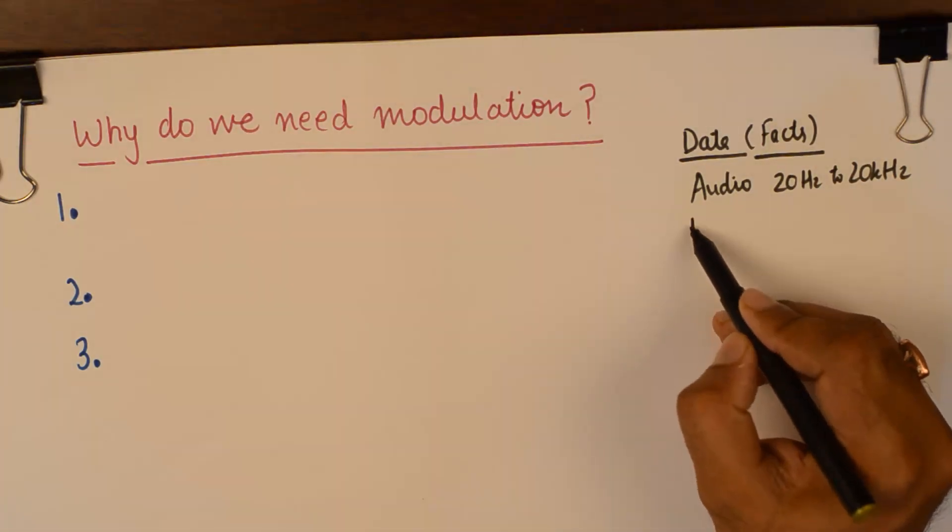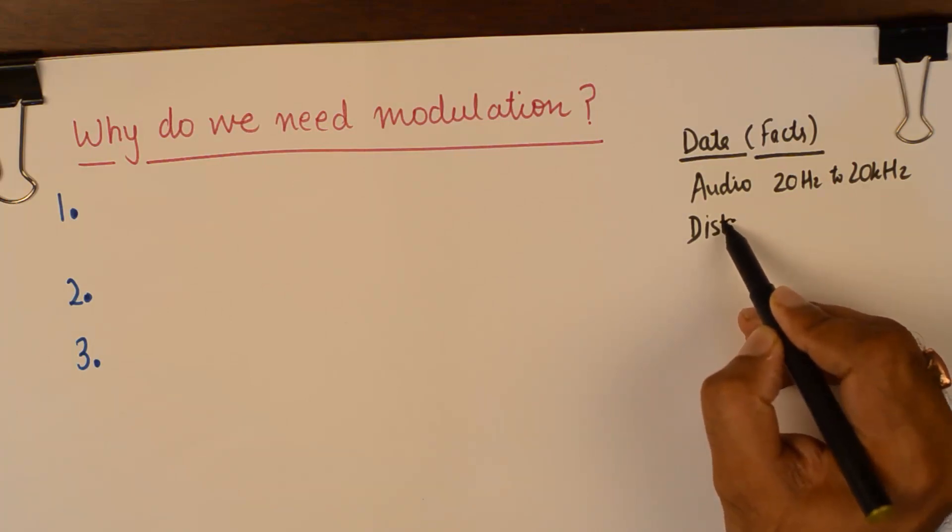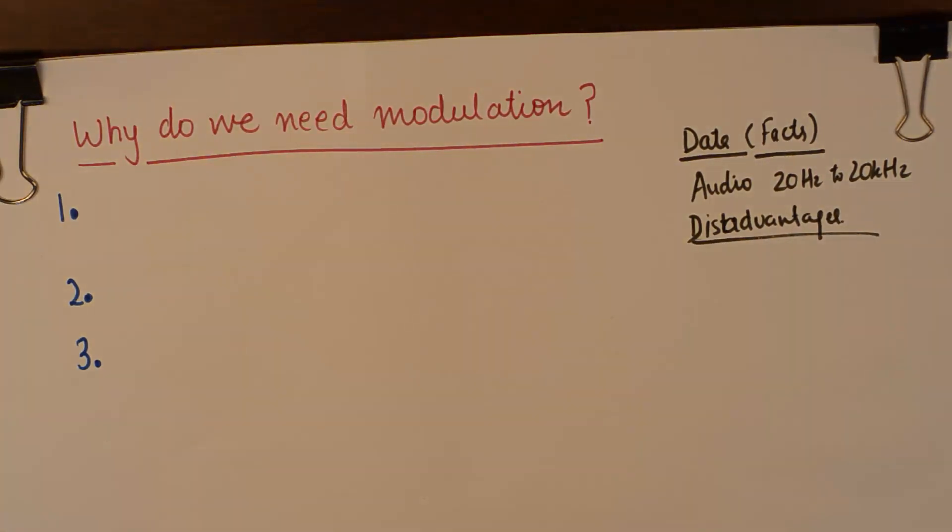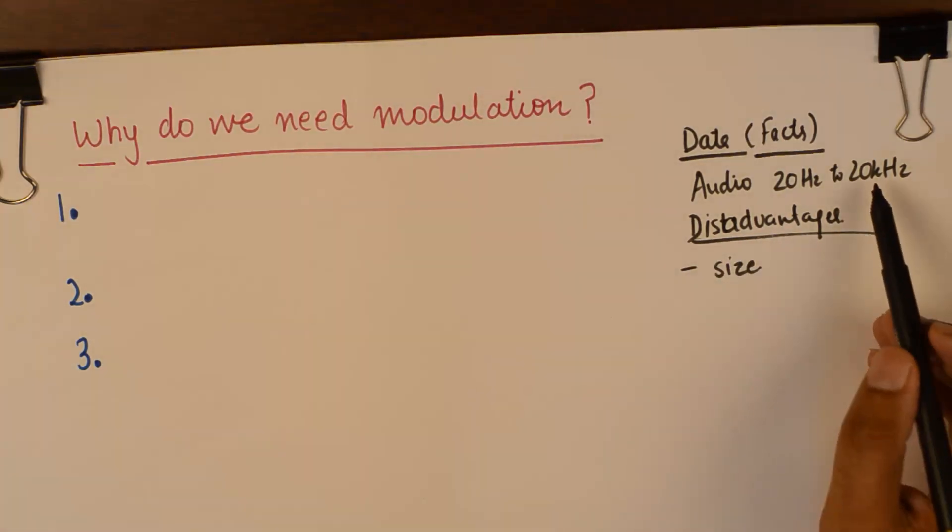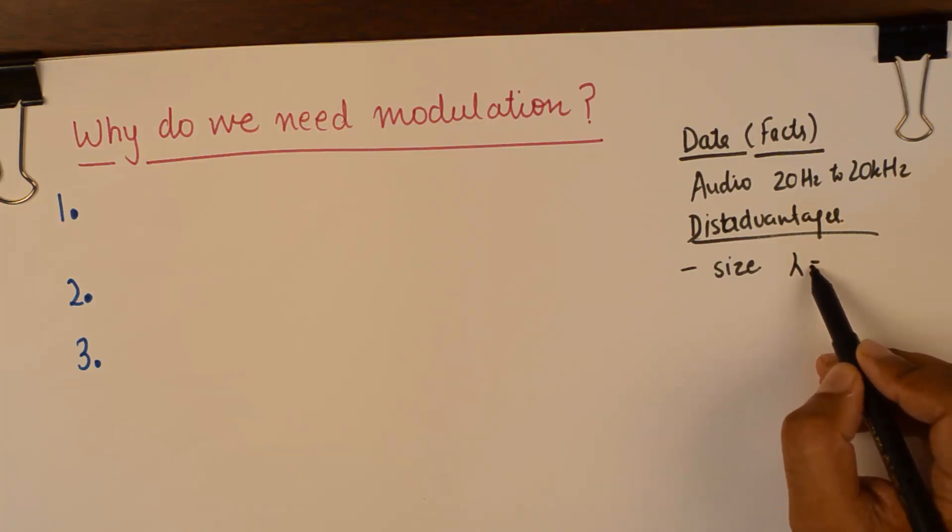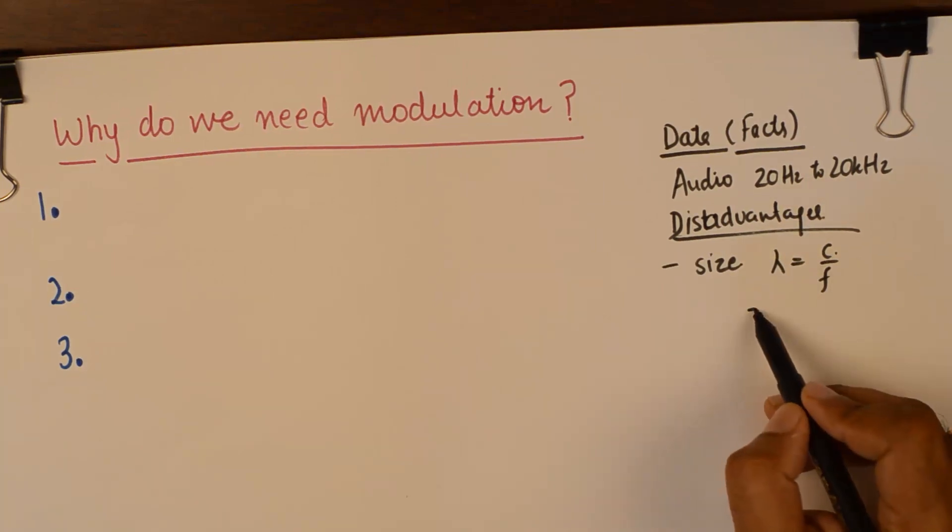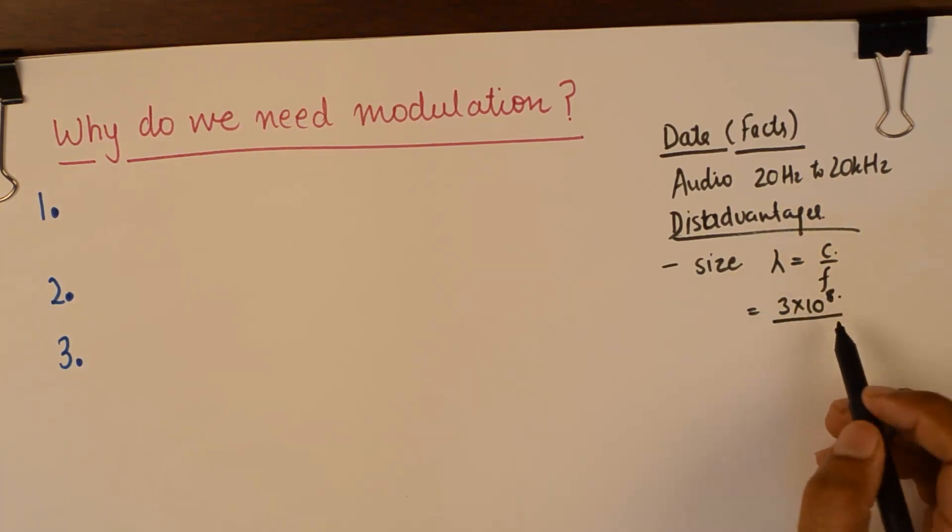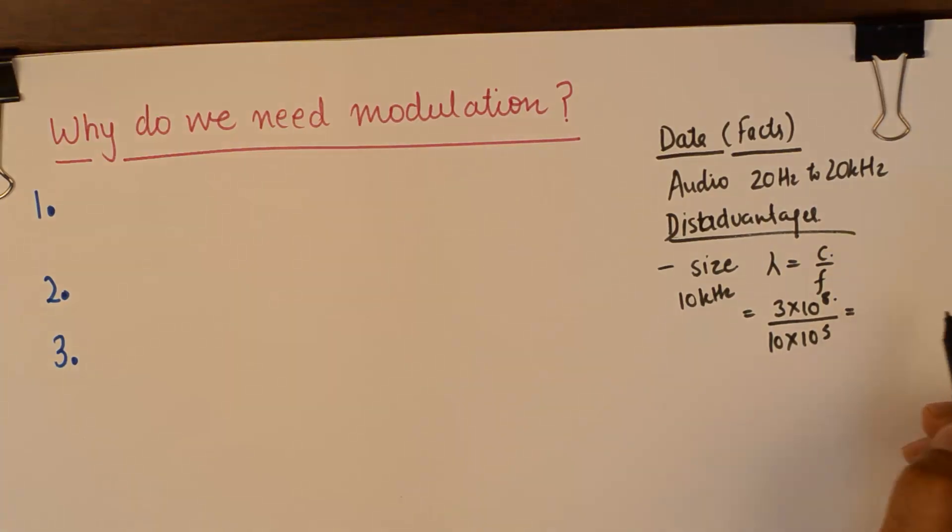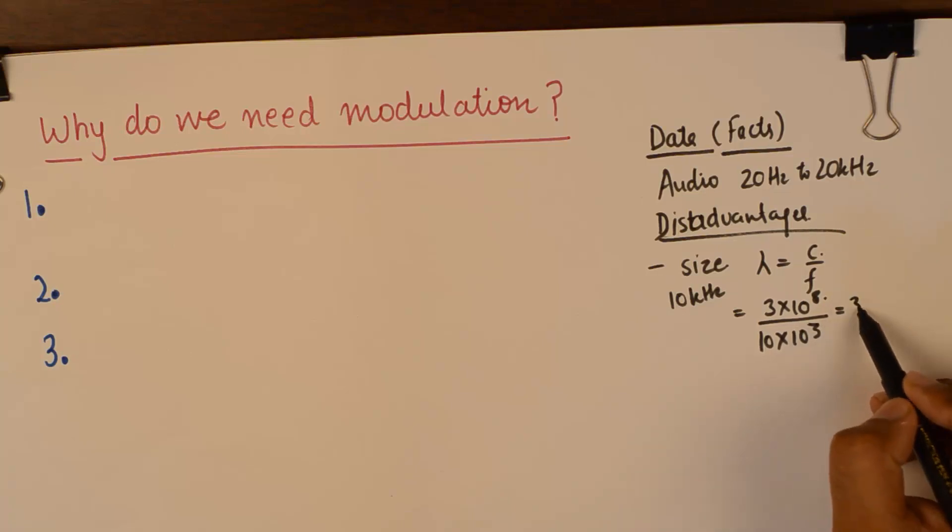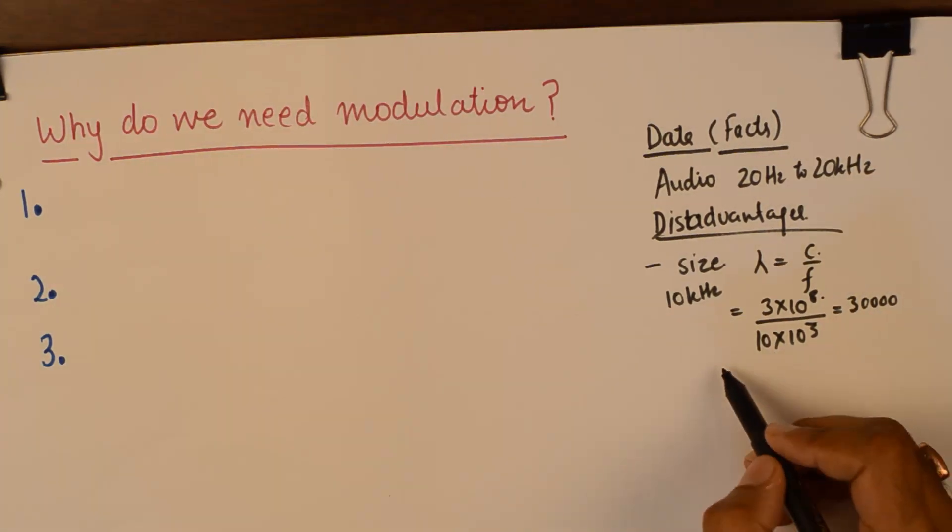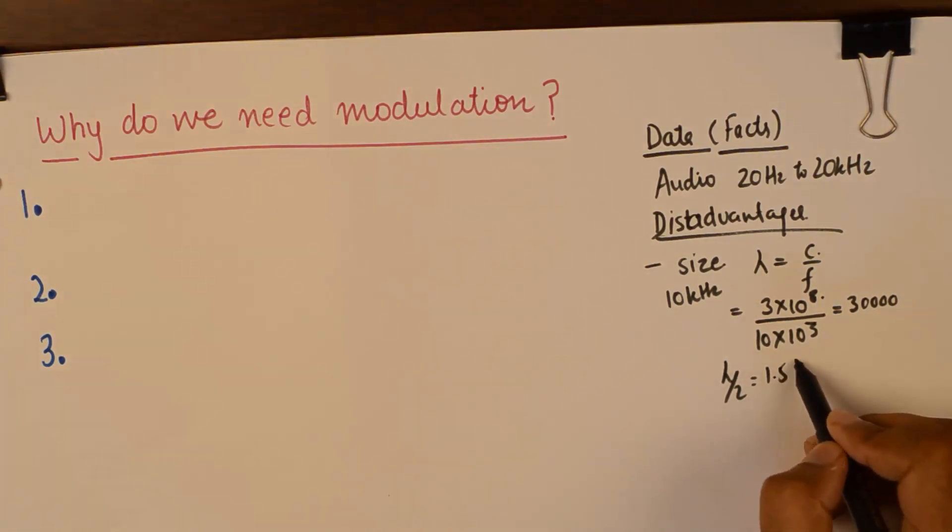There are two disadvantages of having such a low frequency to be sent over the antennas. The size of the antenna becomes very large. If you want to calculate the size of an antenna of a 10 kilohertz signal, you can calculate that by finding out the lambda first, which will be c upon f. That will become 3 into 10 raised to power 8 upon 10. That becomes 30,000 meters or three kilometers, and if you take lambda by 2 that will become 1.5 kilometer long antenna.